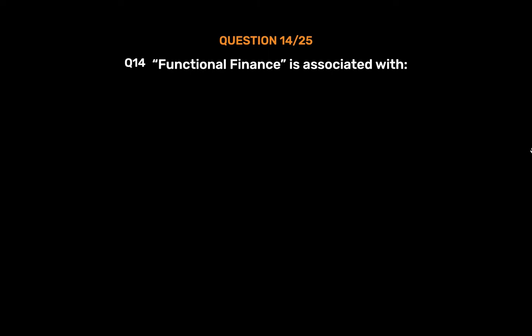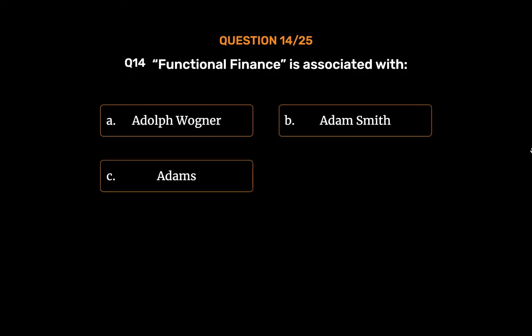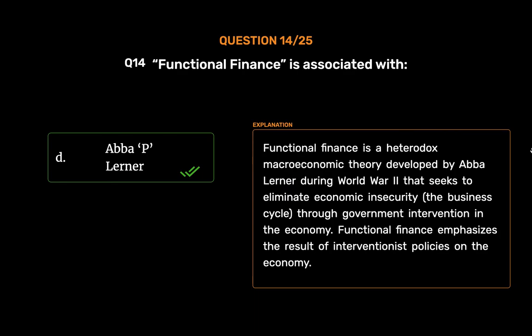Question No. 14. Functional finance is associated with: Option A. Adolf Wagner. Option B. Adam Smith. Option C. Adams. Option D. Abba P. Lerner. The correct answer is Option D, Abba P. Lerner. Functional finance is a heterodox macroeconomic theory developed by Abba Lerner during World War II that seeks to eliminate economic insecurity and the business cycle through government intervention in the economy. Functional finance emphasizes the result of interventionist policies on the economy.